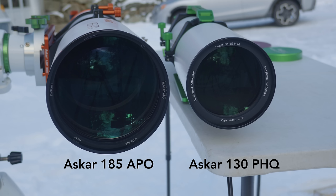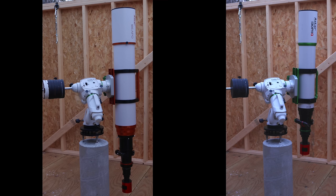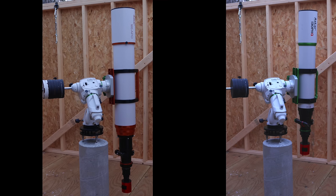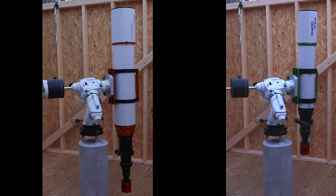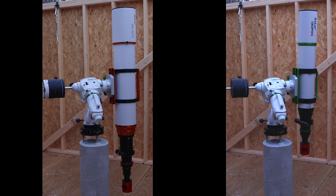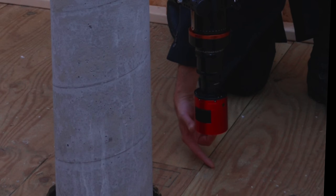To give you an idea of the size, here is the front aperture side-by-side comparison with the Askar 130 PHQ, which is previously the biggest refractor I've ever used. Here is the length comparison. As you can see, the 185 with the camera attached in the right focal position just barely works with my observatory floor when pointed at zenith.